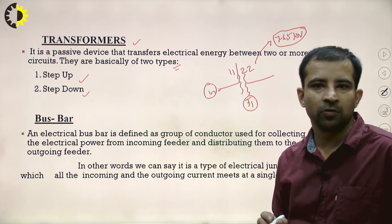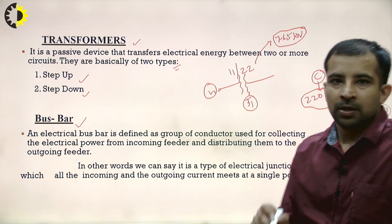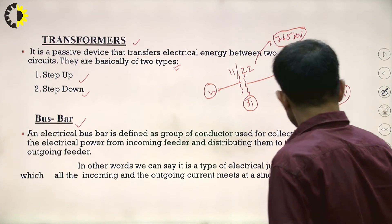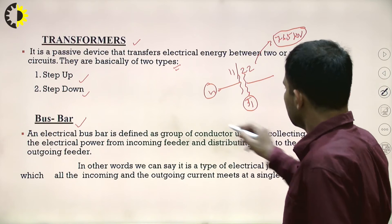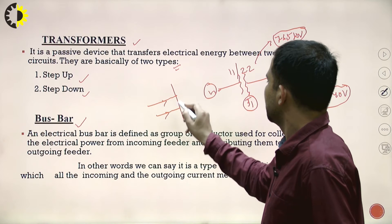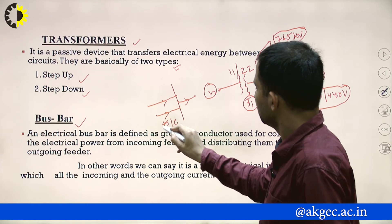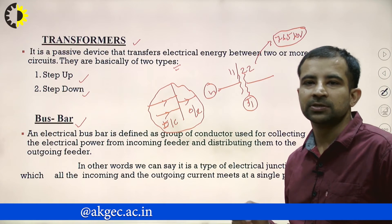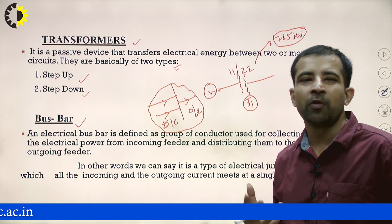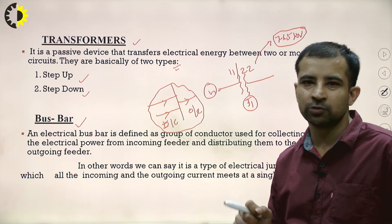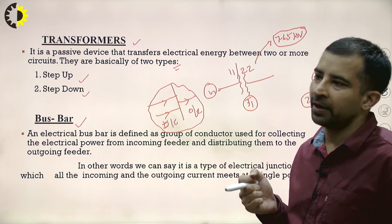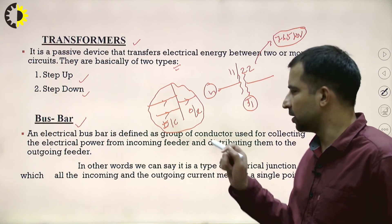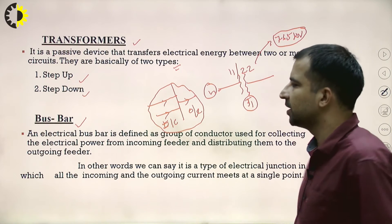The third element is the bus bar. A bus bar is an electrical junction where all incoming and outgoing currents meet at a single point — like a junction with incoming and outgoing currents. In power systems, it is defined as a group of conductors used for collecting electrical power from incoming feeders and distributing it to outgoing feeders.